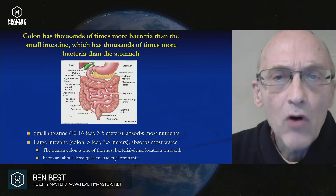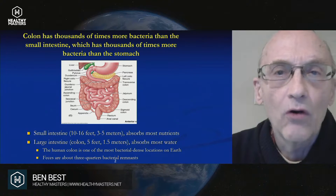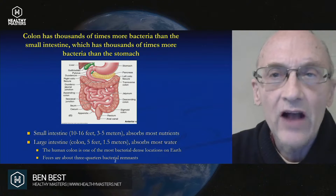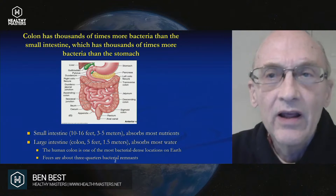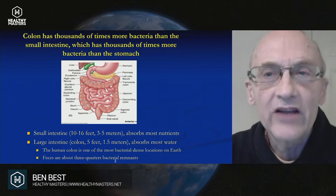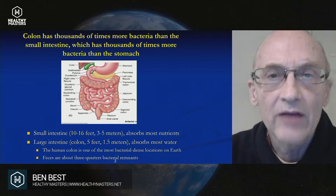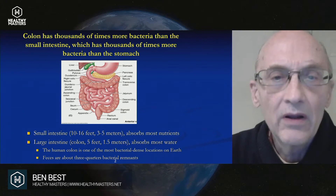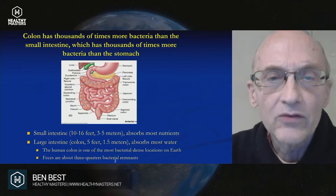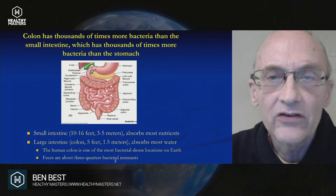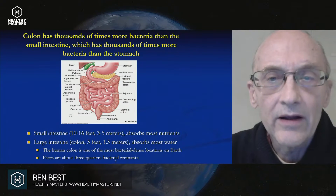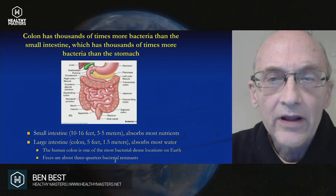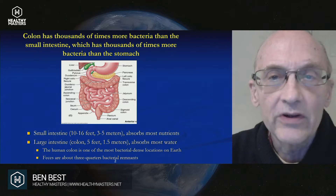Most of the bacteria are in the colon. The colon has thousands of times more bacteria than the small intestine, which has thousands of times more bacteria than the stomach. And the small intestine, as you can see, is in the middle there and it absorbs most of the nutrients that we take in the diet.